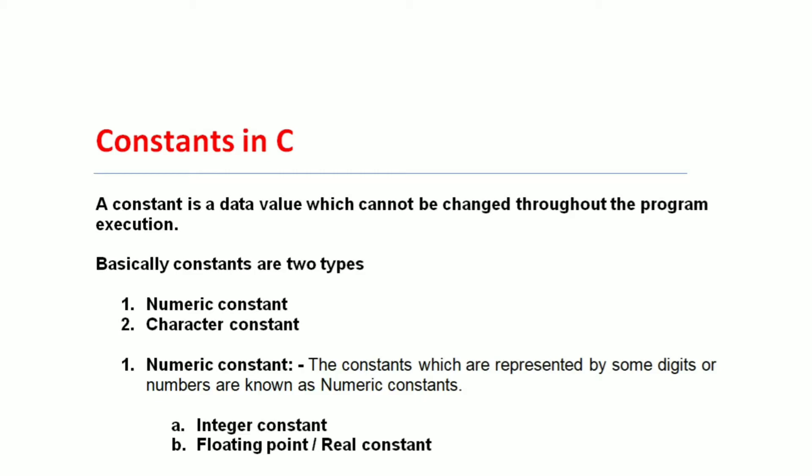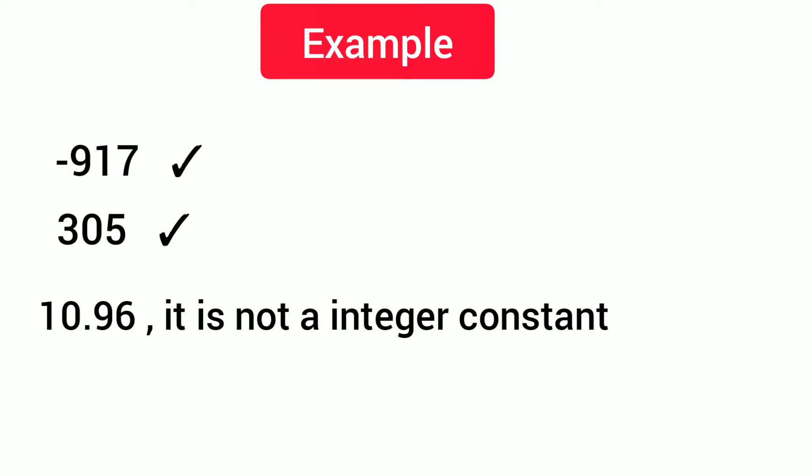Numeric constants are further divided into two types: first is integer constant, and second is floating point or real constant. An integer constant is a constant which is represented by some integer numbers without any decimal point. For example, -917 is an integer constant, 305 is also an integer constant. A value like 10.96 is not an integer constant because it contains a decimal value.